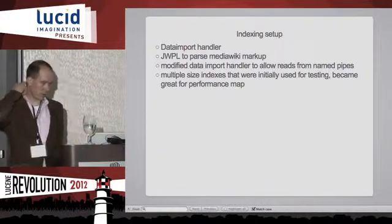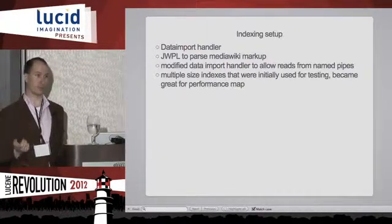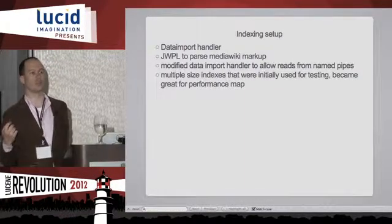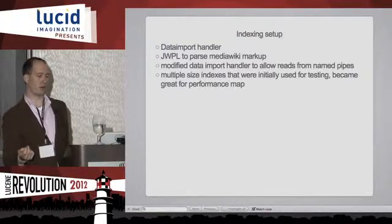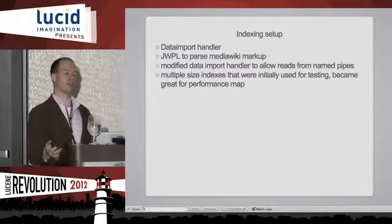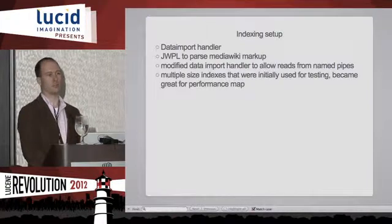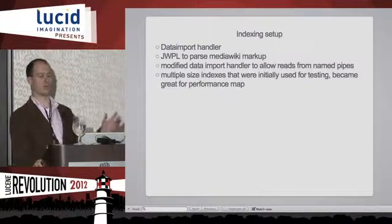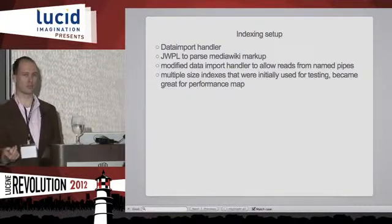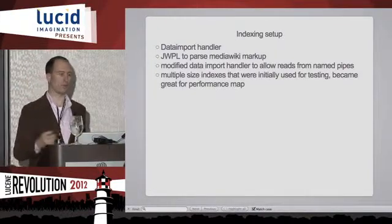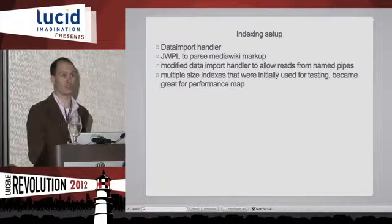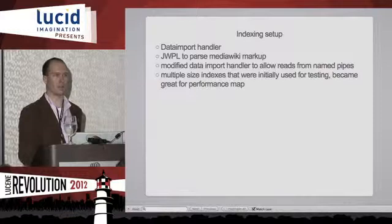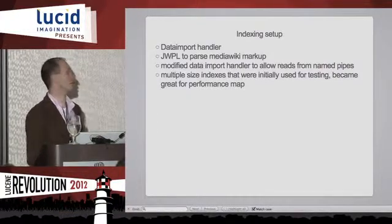First I'm going to go through how the indexing setup worked. I used the data import handler, which is in the contrib section of Solr. That says you can pull data into Solr through SQL or through XML. In the FAQ for that there's a wonderful section where it says here's how you pull from Wikipedia — which you can — but it gives you MediaWiki markup language, not plain text, which is not useful for a lot of things. It's good for seeing that you shoved 12 million documents in there, but if you actually want quality results it's really not that great.